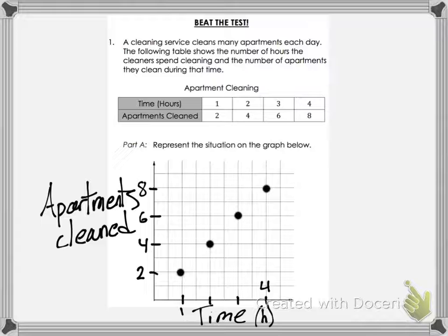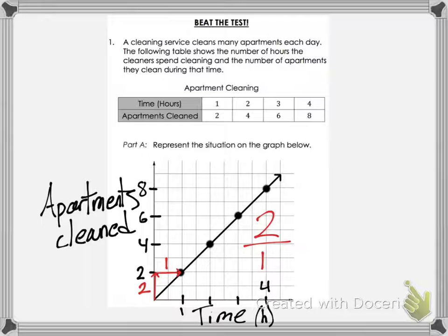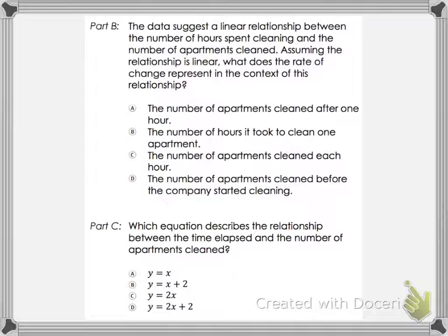The table stopped at 4 and 8, so we end it right there. Finding the slope: a rise of 2 and a run of 1 gives a slope of 2. So 2 apartments were cleaned each hour — that's what it represents.